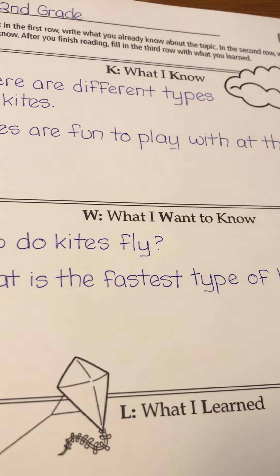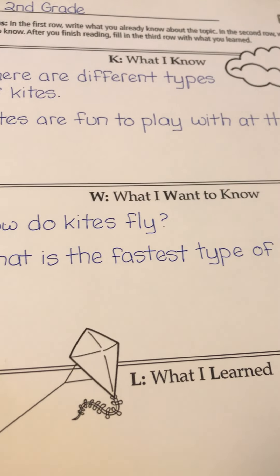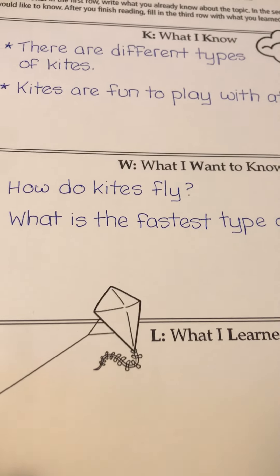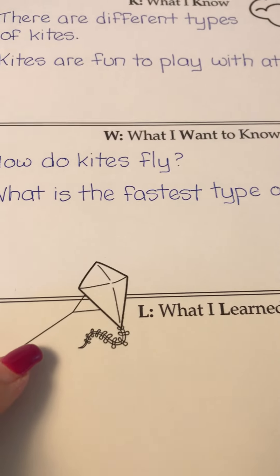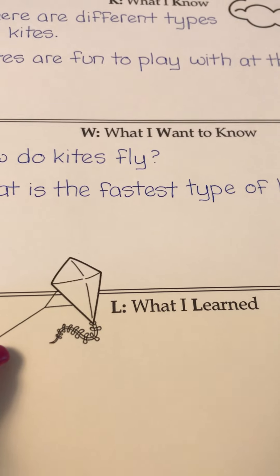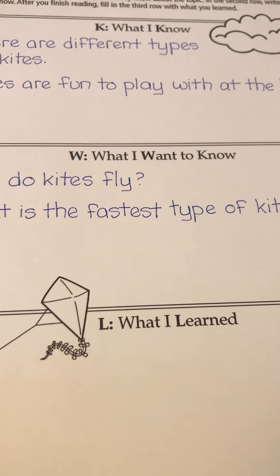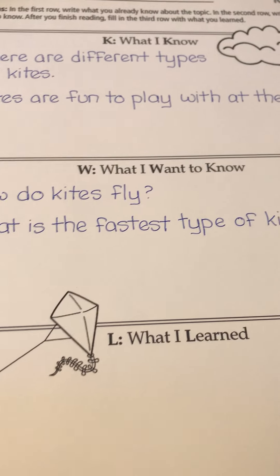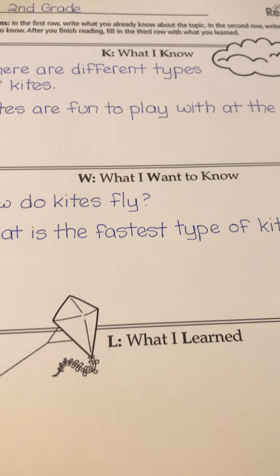I'm going to go through and read the book, and as I read, I'll look and see if the book answers my two questions. If it does, I'm going to write that information down at the bottom in the What I Learned section. Now, it's okay if the book doesn't answer your specific questions. If it doesn't, I would like you to write down maybe two or three new things that you learned about kites anyway.